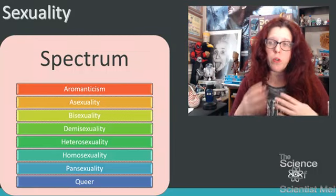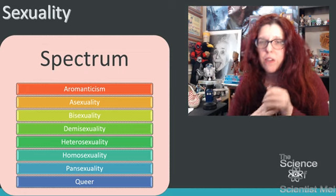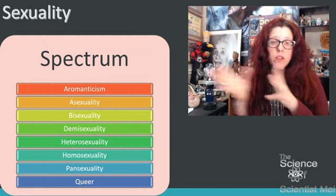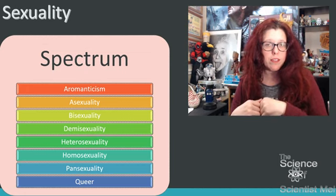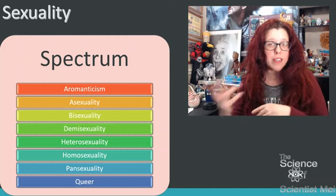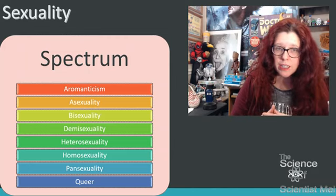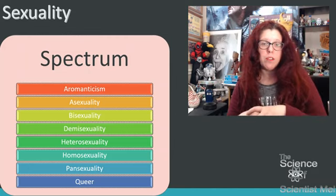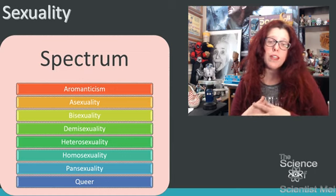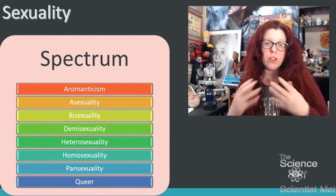When going through all of these different things, we're talking a lot about preferences. You can be more than one of these — you can be aromantic and asexual, you can be bisexual and aromantic, you can identify as queer, or you can identify as multiple versions of this.